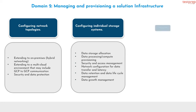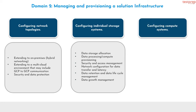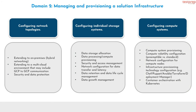Number 3, configuring compute systems. It contains: first, compute system provisioning; second, compute volatility configuration — preemptible versus standard; third, network configuration for compute nodes; fourth, infrastructure provisioning technology configuration, for example Chef, Puppet, Ansible, Terraform, deployment manager; fifth, container orchestration with Kubernetes.